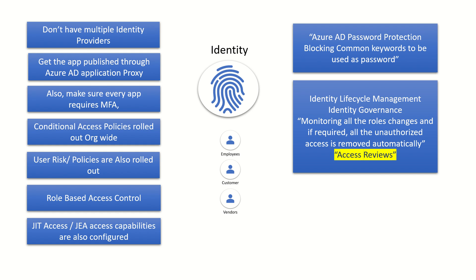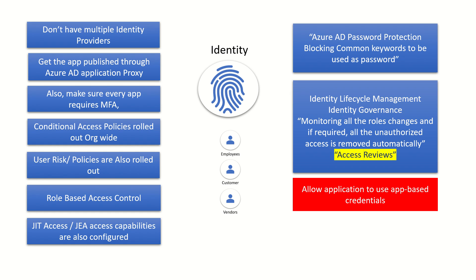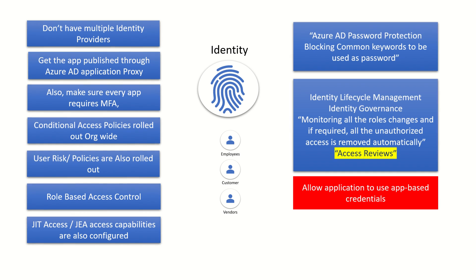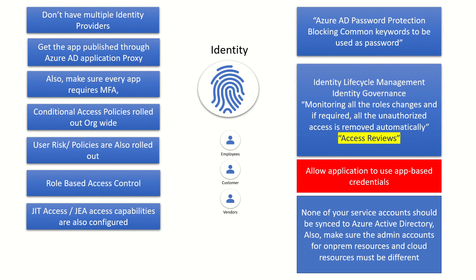Make sure there is no application using native credentials — SSO has to be there. You cannot trust any application, whether in-house, vendor, or cloud-native; everything has to come to a central repository. Only then will you have efficient telemetry that can help improve your security.